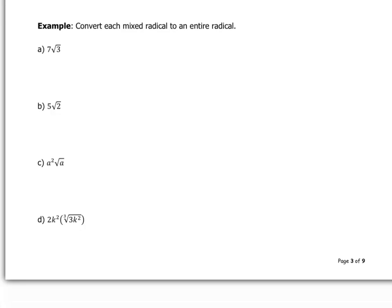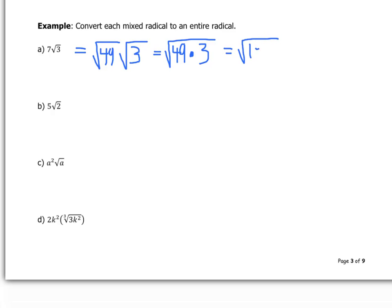We can also do this backwards — convert a mixed radical to an entire radical. For 7 times the square root of 3: rewrite 7 as the square root of 49 (since 7 equals the square root of 7 squared, which is 49). Now we have the square root of 49 times the square root of 3, which equals the square root of 49 times 3. Since 3 times 49 is 147, we get the square root of 147.